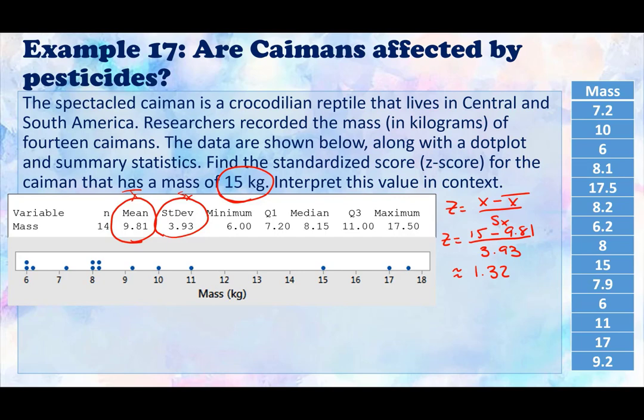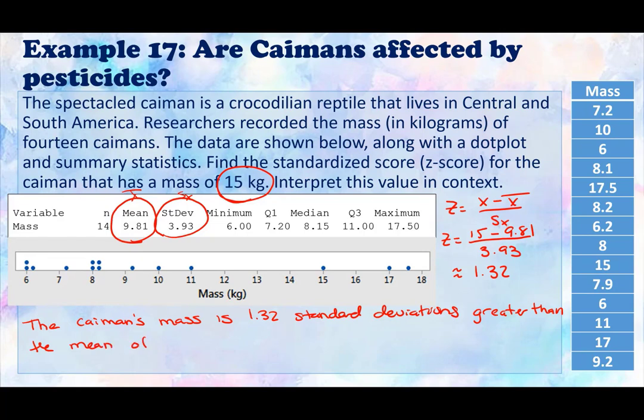Now z-scores are commonly rounded to the nearest hundredths place or two decimal places. So what does this mean in context? This means that the caiman's mass is 1.3 standard deviations greater, because it's positive, than the mean, the sample mean, because this is a sample of caimans. And this mean was 9.81 kilograms.